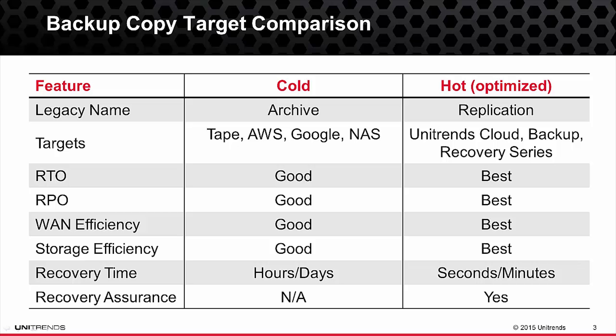You also see additional efficiencies around these two types of targets. In all categories, hot is the best and ideal option around WAN efficiency, RTO, RPO, and storage efficiency.